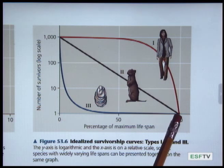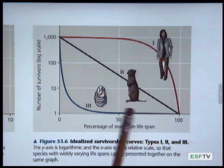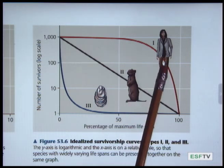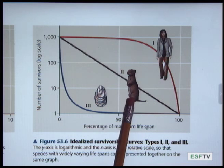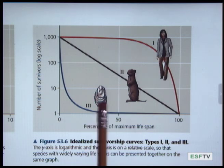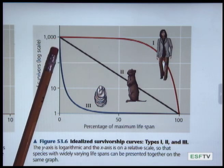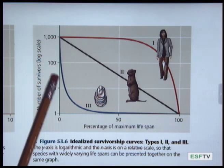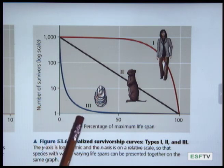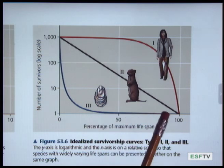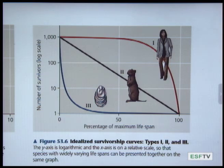The graphic also shows representative organisms: humans for Type 1, gophers or ground squirrels for Type 2, and oysters for Type 3. Type 3 individuals suffer very high mortality early in their lifespan — very young individuals are much more likely to die — but once they reach a certain age they are more likely to survive. So Type 1 and Type 3 survivorship curves are in direct contrast to each other.